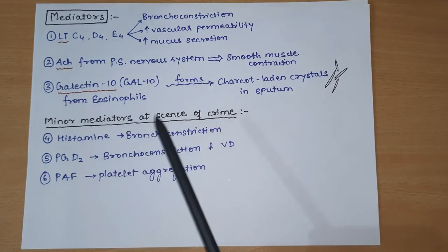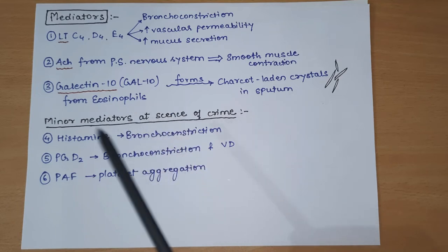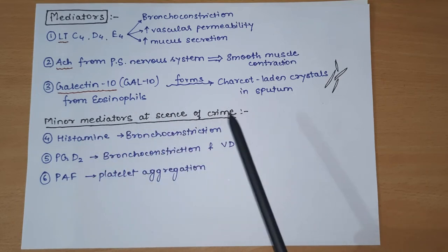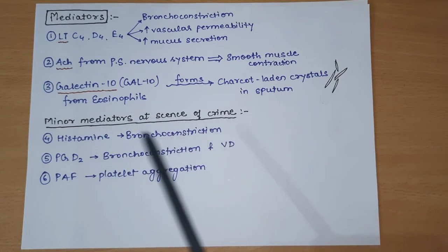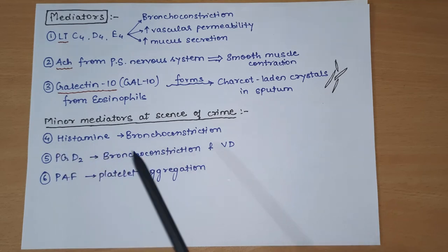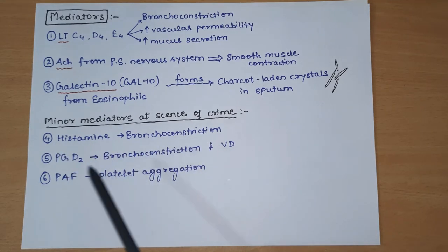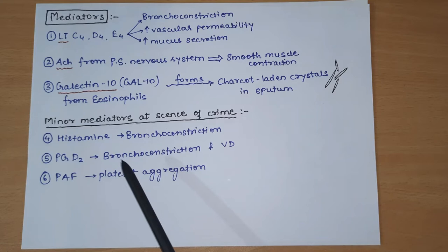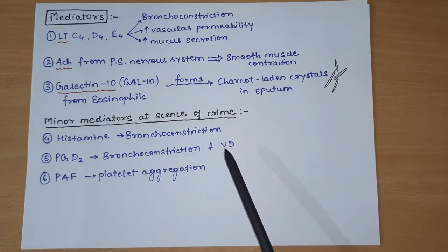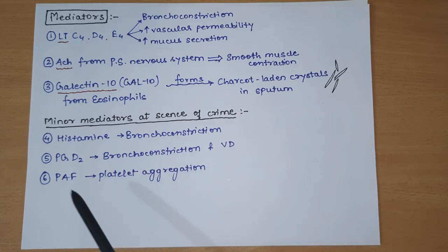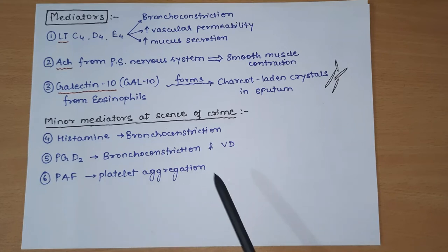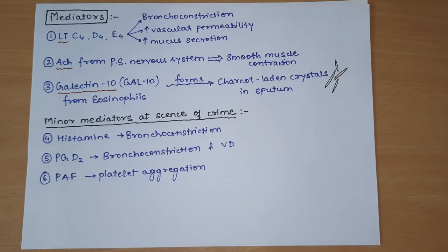These three mediators play an important role in bronchial asthma. Some minor mediators are also present: histamine, which causes bronchoconstriction; prostaglandin D2, which causes bronchoconstriction and vasodilation; and platelet aggregating factor (PAF), which causes platelet aggregation. So these were the mediators, and this was the pathogenesis of atopic asthma.